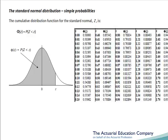Let's use these tables to calculate the probability that the standard normal is less than 0.94. Well, 0.94 is the value of z given in bold here, and so the probability is given by phi of z in the next column, which is 0.82639. So far, so good.